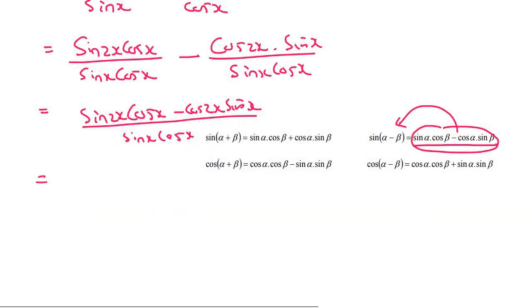And so that's going to end up giving us sin of 2x minus x over sin x cos x. Now sin of 2x minus x is just x, and so that becomes quite simple. So that's just going to be sin x.